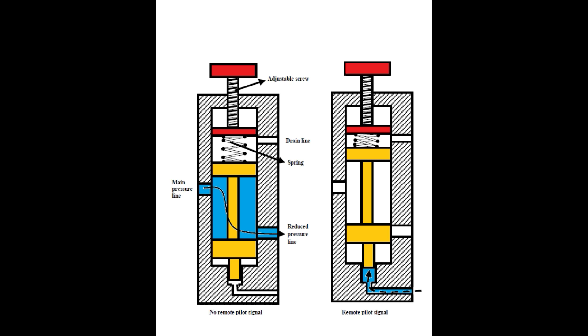Let us see the working of a sequencing valve. A sequencing valve is a pressure control valve that is used to force two actuators to operate in a sequence.